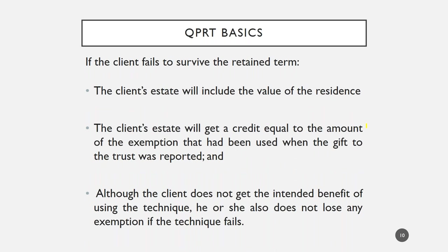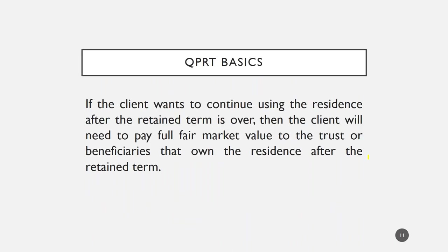If the client fails to survive the retained term, the residence value will be included in the estate. However, if the client filed a gift tax return and used some exemption, the client will get a credit for that exemption at death so that you don't waste it. And even though you get the credit back, there's no benefit to the technique in that scenario. So it's a very low-risk situation if you use the actuarial tables correctly and account for your client's health and life expectancy.